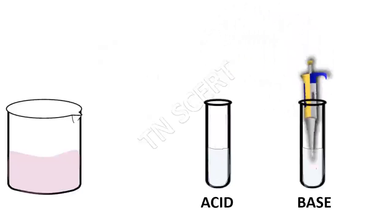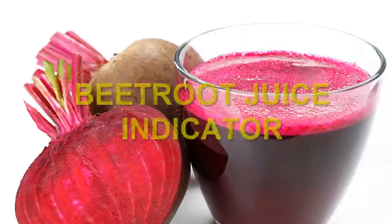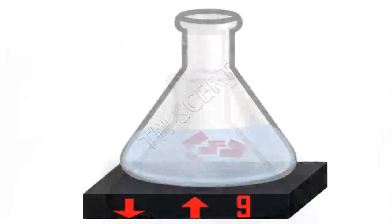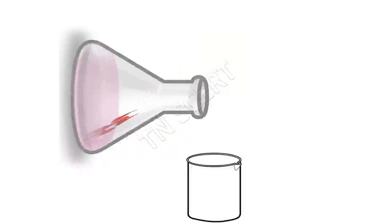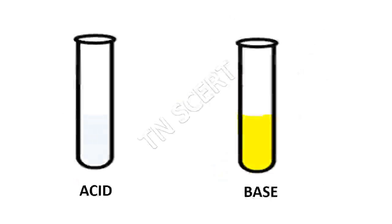In basic solution, the hibiscus indicator will turn green. Beetroot juice indicator: Take a small beetroot, cut it into small pieces, and boil them in hot water for 10–15 minutes. Filter the extract and use it as the indicator. In acid it shows no color change, whereas in base it turns to yellow.